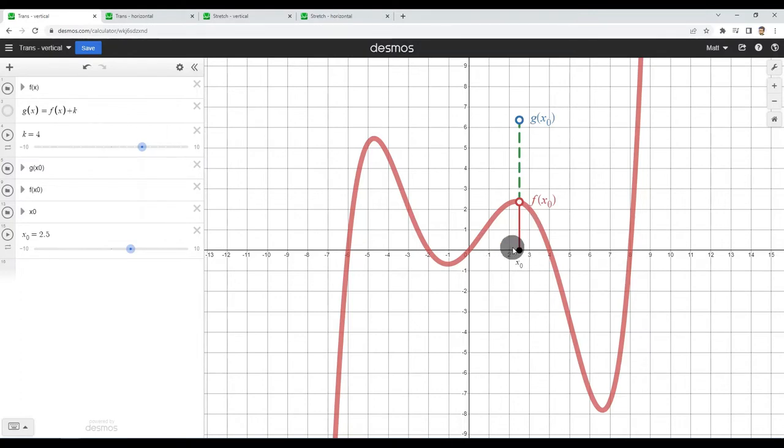So I transform it by adding four and I get my blue value, which I have here as g of x naught. That was my original input and I get this output. I just jump up by four. If this were negative, I'd be jumping down by a certain amount.